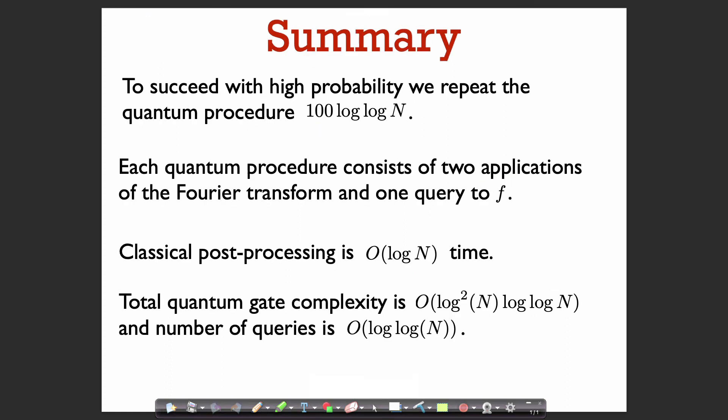To summarize the whole algorithm: the quantum procedure consists of two applications of the Fourier transform and one query to f. We have to repeat the quantum procedure O(log log n) times to succeed with constant probability. So the total number of queries is O(log log n), and the total quantum gate complexity is O(log² n) per Fourier transform application times log log n. That's a summary of the complexity of Shor's discrete logarithm algorithm.